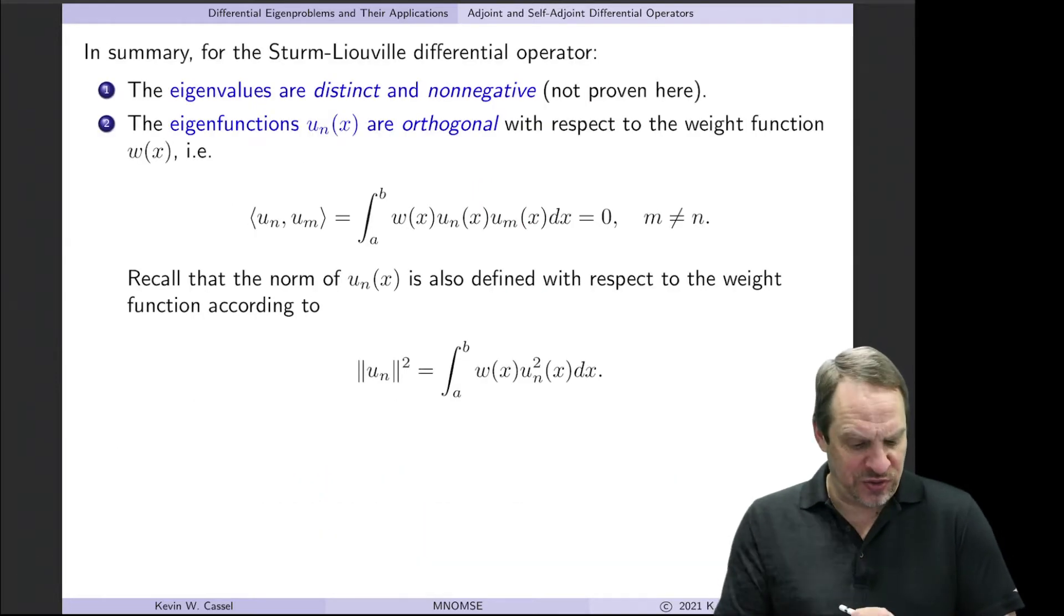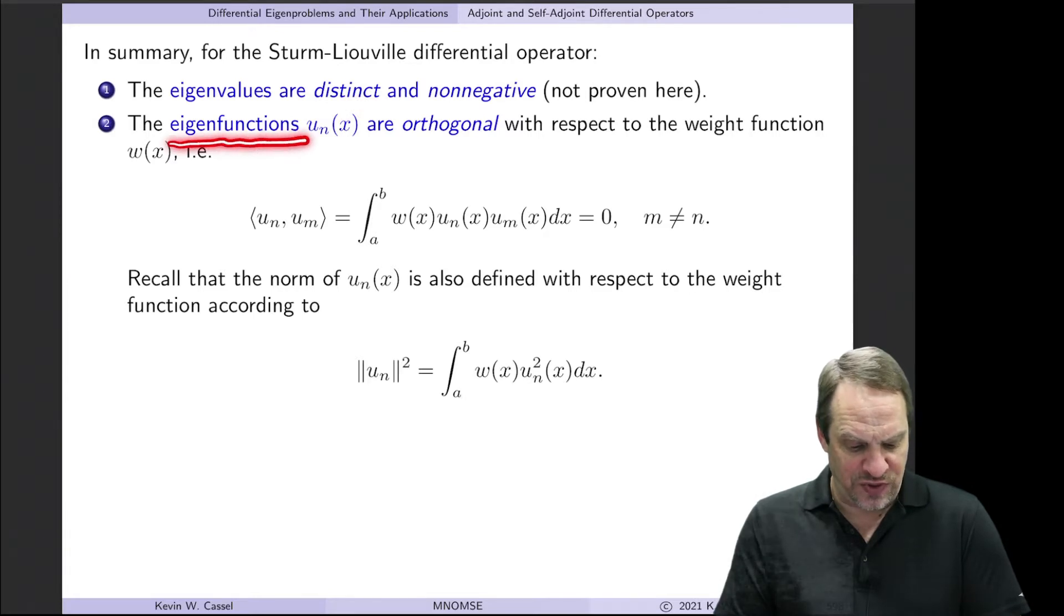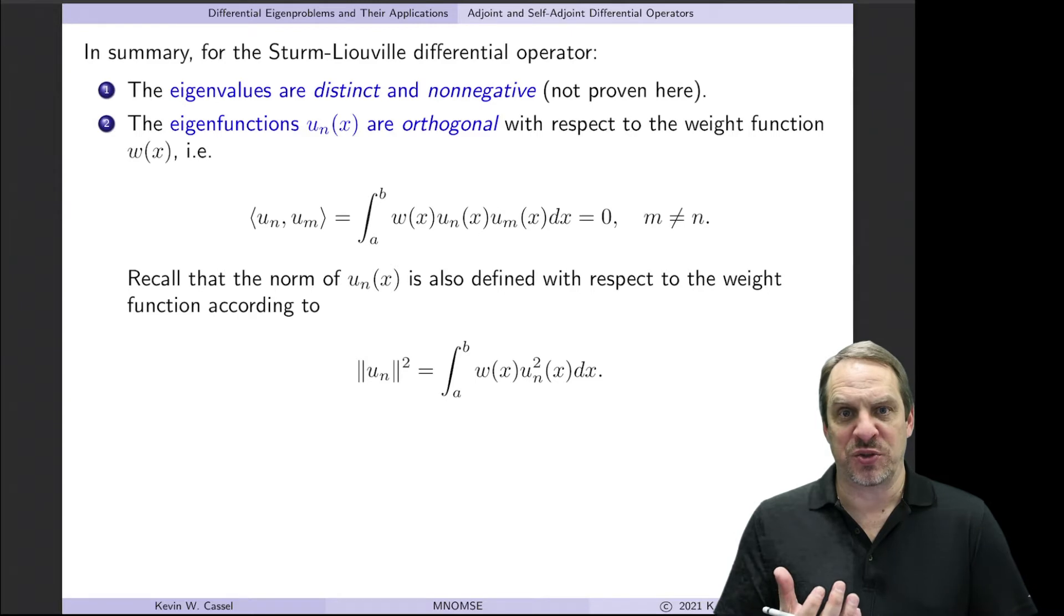Now there's two main results. The first one we did not prove, and that is that the eigenvalues of the Sturm-Liouville operator are both distinct and non-negative. The second one, which we did prove, is that for distinct eigenvalues, the corresponding eigenfunctions are indeed mutually orthogonal. And we've been taking advantage of this property throughout our solutions of these differential equations.